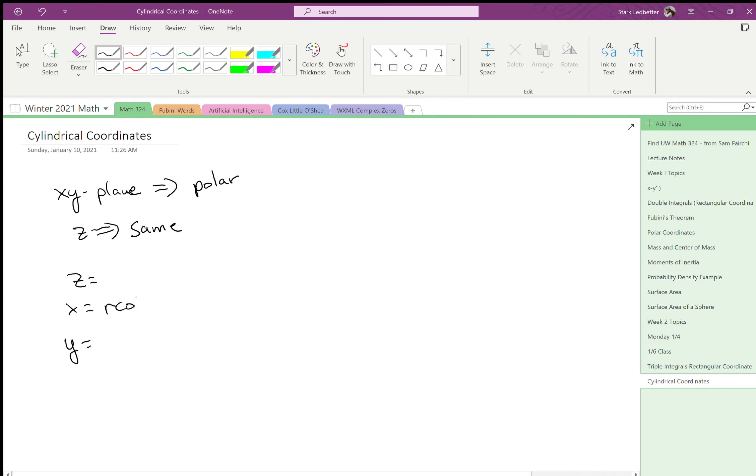So the conversions are exactly the same: x is r cosine theta, y is r sine theta, and then z is just z.